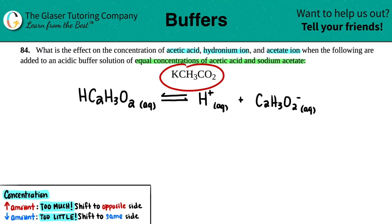And then we have KCH3CO2. So basically we're adding potassium acetate to our solution here. And in this case, all we care about is what's going to happen to the acetic acid, the hydronium ion, and the acetate ion.